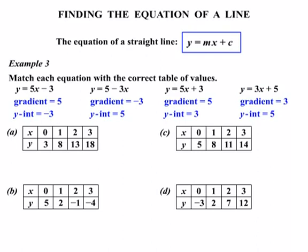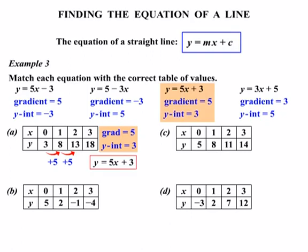Now let's look at our tables of values, starting with A, focusing on the y-values. Moving from the first y-value of three to the next of eight, we've added five. Checking the next value — eight to thirteen — we've added five again. That change in y-values equals our gradient, so this table has a gradient of five. When x equals zero, y equals three, giving us our y-intercept. Gradient five, y-intercept three matches y equals five x plus three.